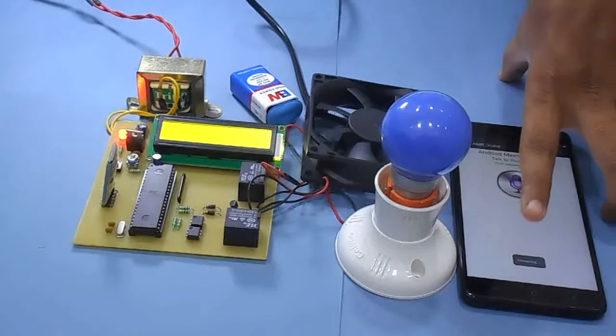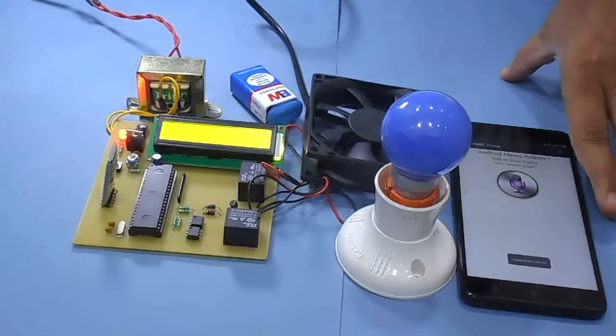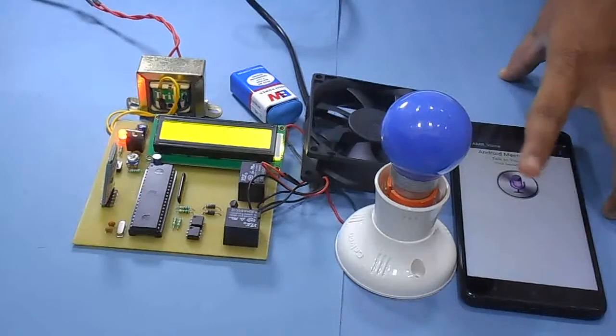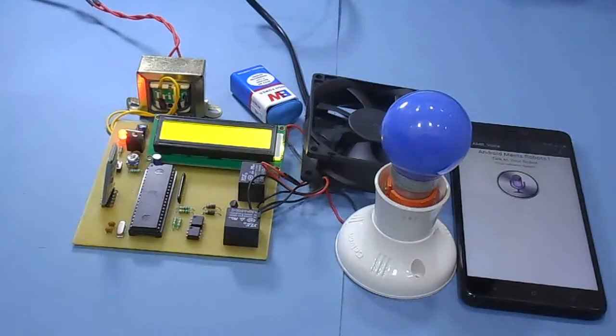Now you will get message here: connected. Now your app is connected with this HC05 Bluetooth module.